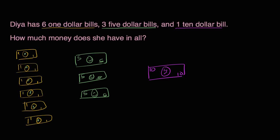So how much money does she have in all? Well, the six $1 bills, that's going to be $6. The three $5 bills, that's going to be worth $5, $10, $15. So plus $15. And then the one $10 bill, that's going to be worth $10.